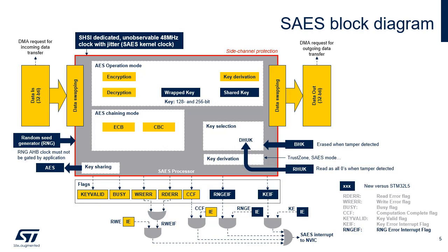This SAES block diagram highlights the new features supported by SAES compared to AES. First, the 48 MHz kernel clock is unobservable — it's not visible externally. SAES fetches random numbers from the RNG peripheral automatically after a module reset triggered in the RCC. SAES cannot be used when RNG EIF is set. This flag is set when an error is detected while fetching a random number from the RNG peripheral, due to, for example, bad entropy. SAES has the possibility to load the secret keys DHUK and BHK by hardware. These keys can be cleared and erased when a tamper is detected, making all secrets indecipherable by the attacker. Note that any key managed by SAES, including DHUK and BHK, can be shared with the AES module when the SAES key sharing function is activated.